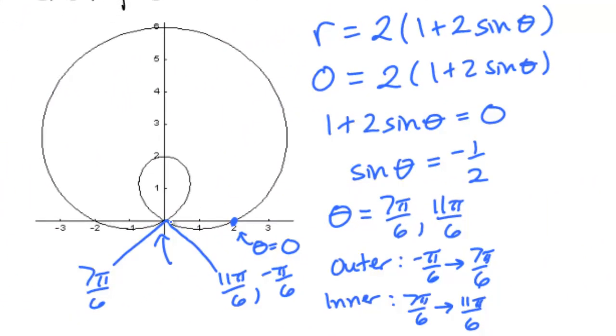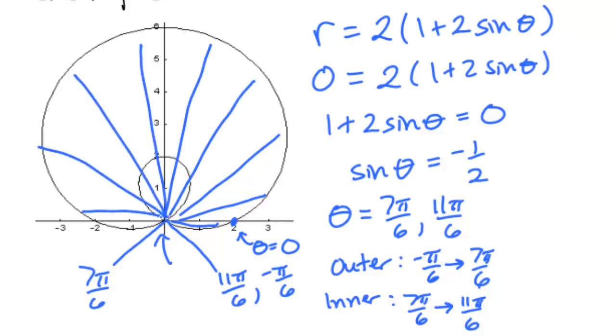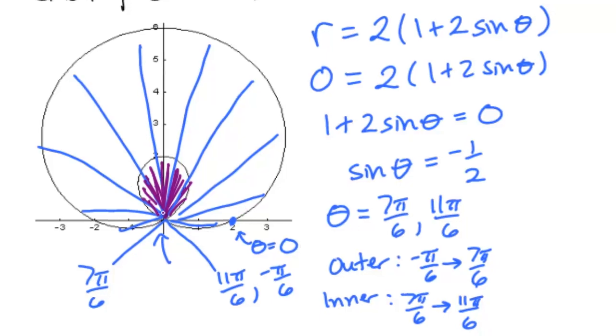So we're going to find the area of the outer loop from negative π over 6 going around all the way until we reach the angle 7π over 6. But we will then have to subtract the section where we go from 7π over 6 to 11π over 6. Note that we have to do this as two separate integrals even though it's one curve, and that's because the value for r goes from positive to negative in these different regions.